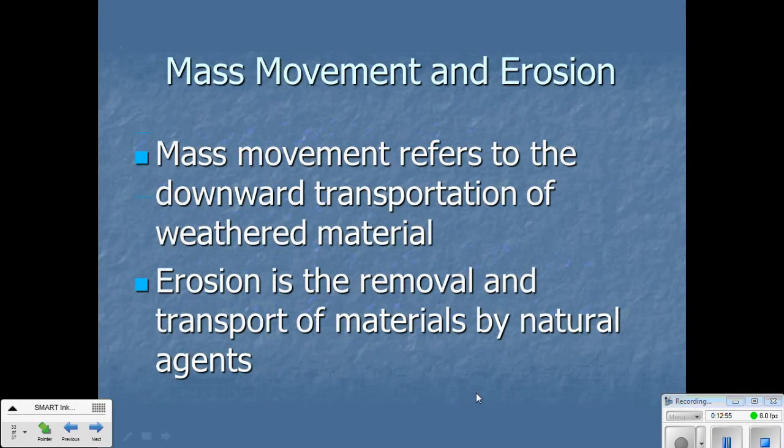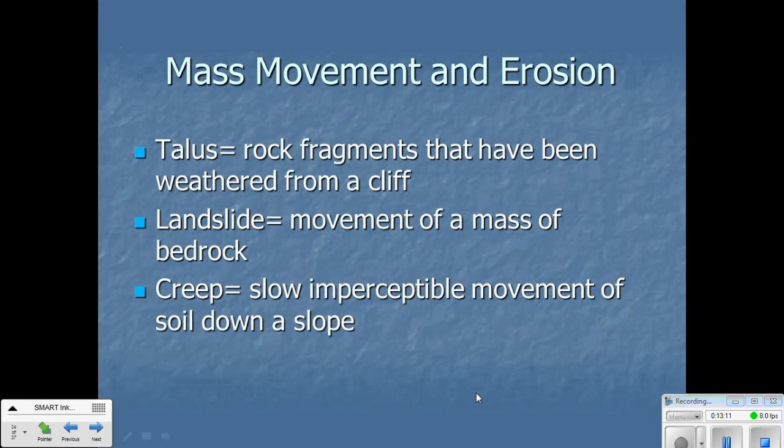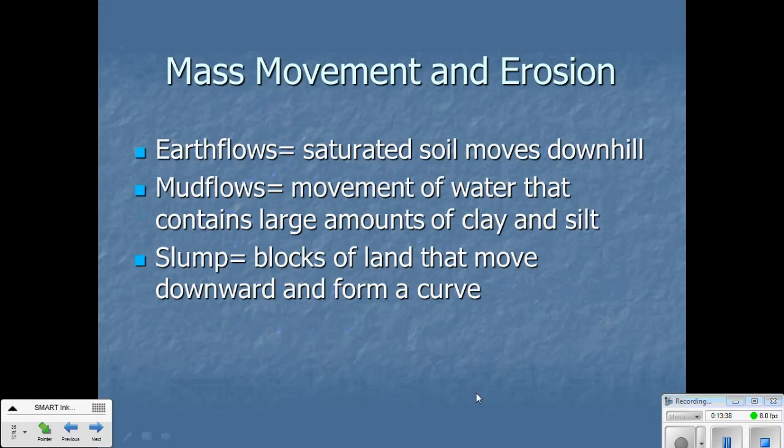Mass movement and erosion. Mass movement refers to the downward transportation of weathered material. We're talking about moving a whole lot of stuff all at once. Erosion is the removal and transport of materials by natural agents. Talus are rock fragments that have been weathered from a cliff. A landslide is a movement of a massive amount of bedrock down the side of a mountain, typically. Creep. Slow, imperceptible movement of soil down a slope. Earth flows. Saturated soil moves downhill. Mud flows are movement of water that contains large amounts of clay and silt. And slump are blocks of land that move downward and form a curve.